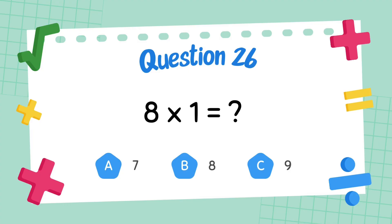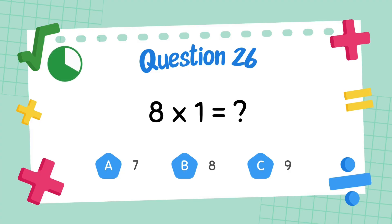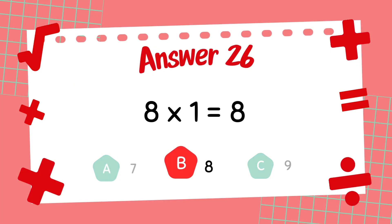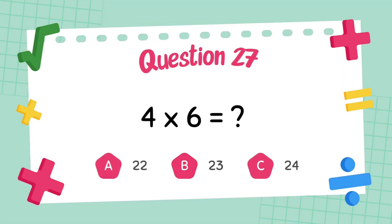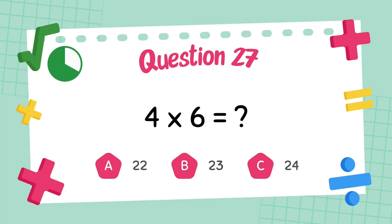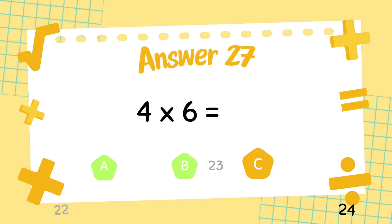What is 4 multiply 6? The answer is 8. What is 4 multiply 6? The answer is 6. The answer is 24.